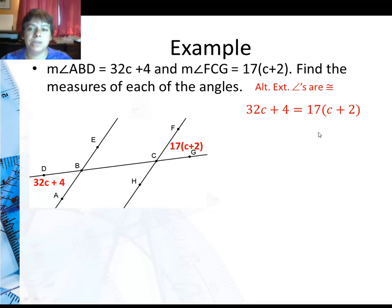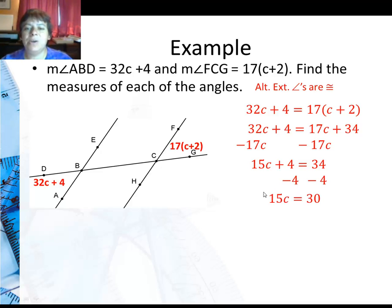Now I need to distribute this 17C. So now I have 17C's, 17 times 2, that's 34. Subtract 17C from both sides. And I get 15C plus 4 equals 34. That was the subtraction property of equality, by the way. And using the subtraction property of equality, I'm going to subtract 4 from both sides. So I get 15C is 30. Then I can use the division property of equality, divide both sides by the same thing, 15. And I get C equals 2.